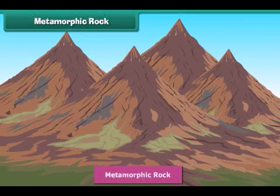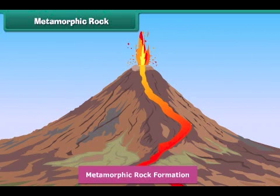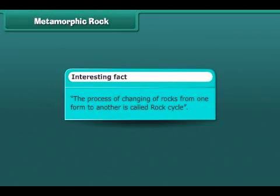Now we come to metamorphic rock. It is formed either from igneous or sedimentary rock. These rocks are changed or modified into metamorphic rock due to the influence of heat and pressure. This process occurs deep inside the earth. Metamorphic rock is usually hard and often contains crystals. Marble and slate are examples of this kind of rock.